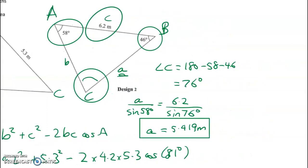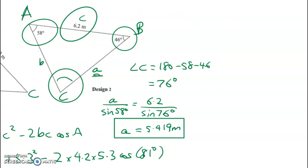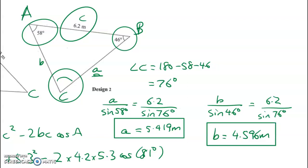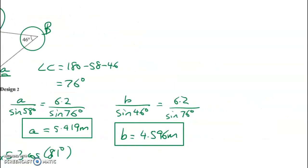Now we do the same sine rule calculation over here. So b over sine of 46 degrees equals 6.2 over sine of 76 degrees. b equals 4.596 meters. So we've got the side lengths, we've got the angles, we can do the perimeter and the area now as well.